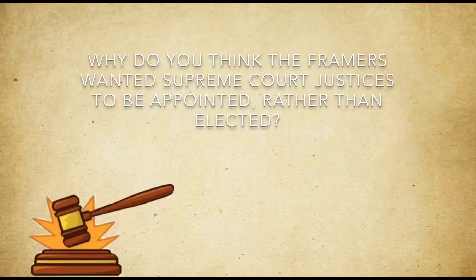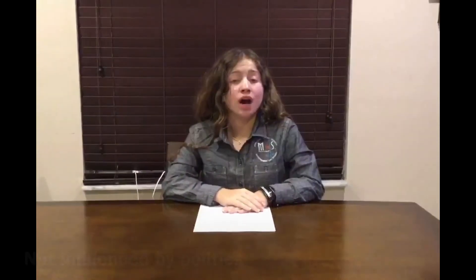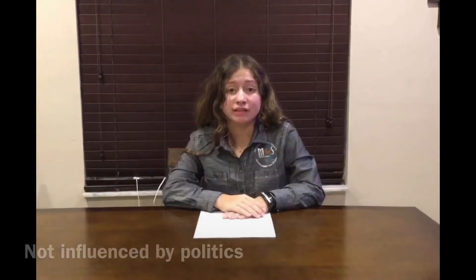Why did the framers want Supreme Court justices to be appointed rather than elected? The framers thought justices should be appointed so they are not influenced by politics and can make decisions based on their own understanding of the Constitution. The judicial branch also has the power to overrule state laws that violate the Constitution or any laws passed by Congress — this is based on Article 6, the Supremacy Clause. If the state makes a law and the federal government makes a law, the government's law stands higher than the state's.